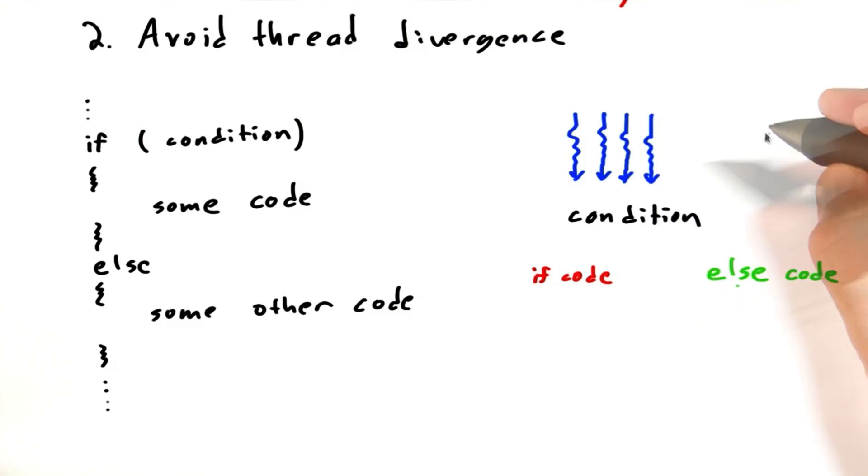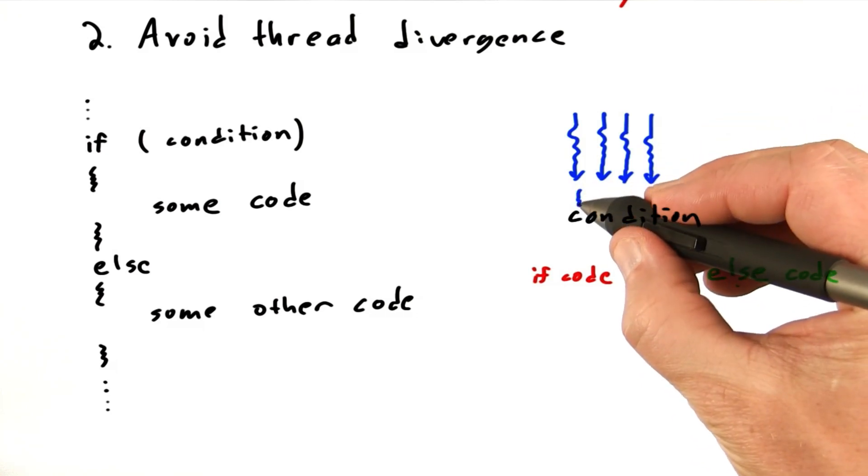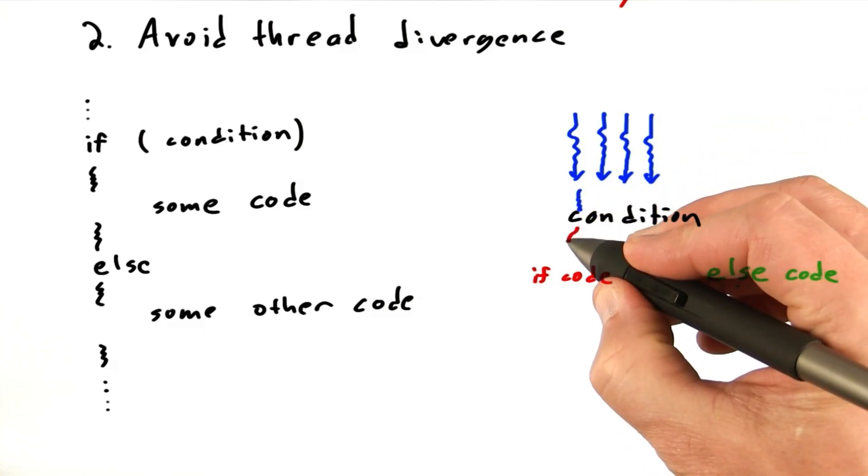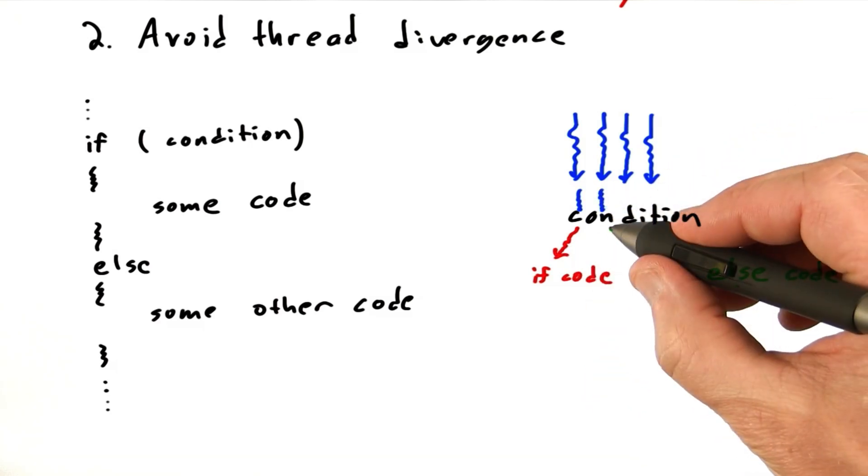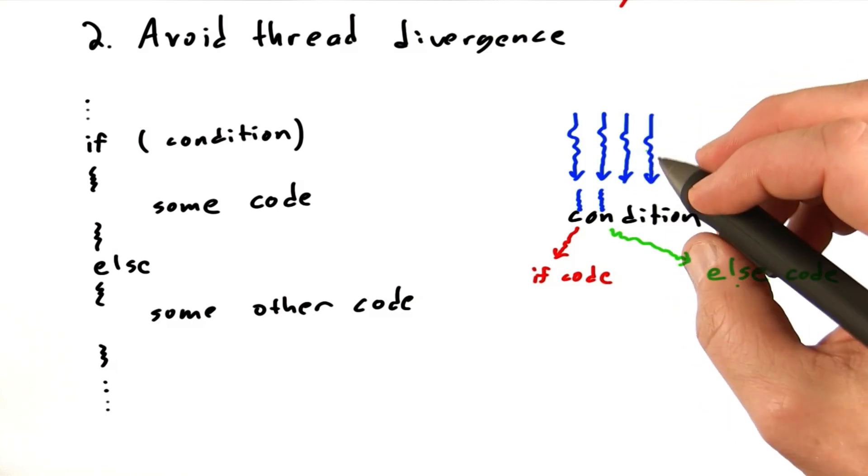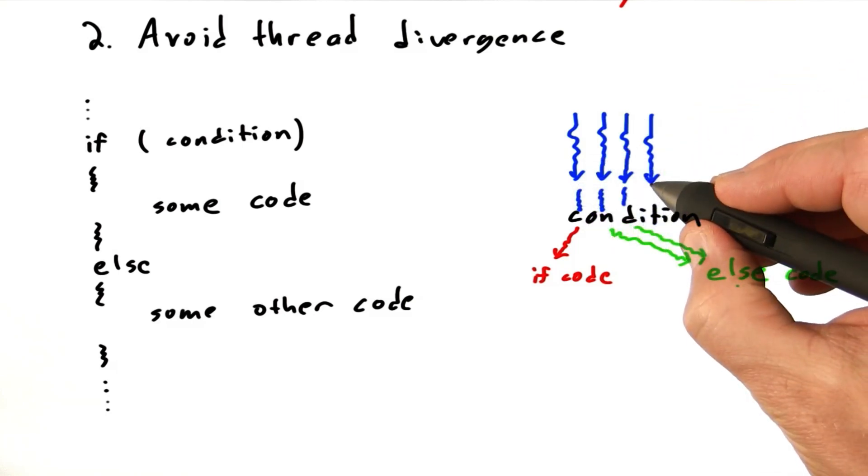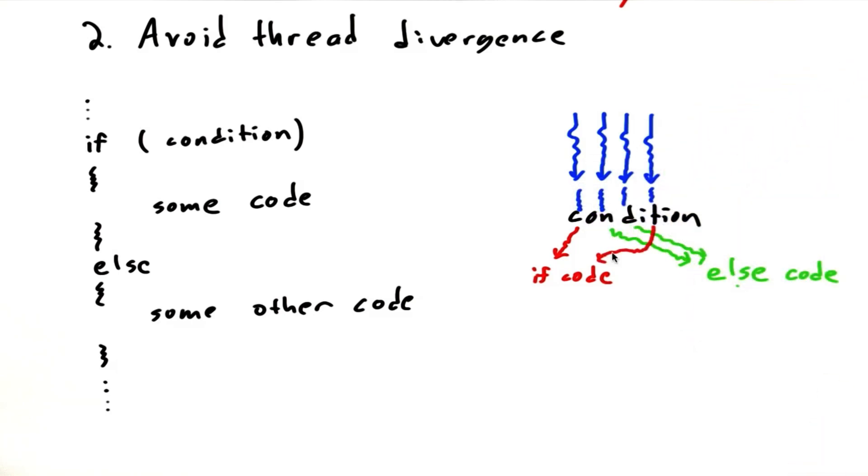So this thread proceeds, hits the condition, and then let's see it takes the if branch. Maybe this thread proceeds when it hits the condition, maybe it takes the else branch. Perhaps this thread takes the else branch as well, and maybe this thread takes the if branch. So these threads have diverged.